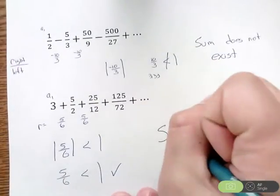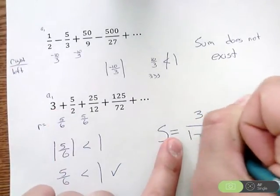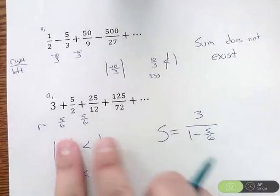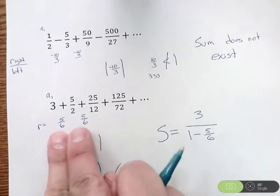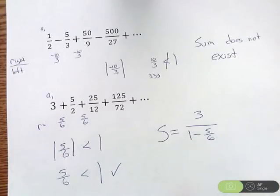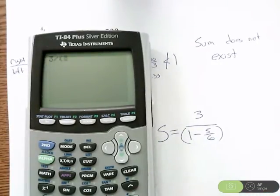We're going to have S equals A1 up top, which is 3, and on bottom 1 minus R, so 1 minus 5/6. By the way, we use the R we actually had. If we had a negative R, it would be 1 minus negative 5/6, which turns into 1 plus 5/6. But 5/6 is positive here, so it's just 1 minus 5/6. I'm going to plug this into a calculator: 3 divided by parentheses 1 minus 5/6. Hit enter, and you're going to find the sum is 18.